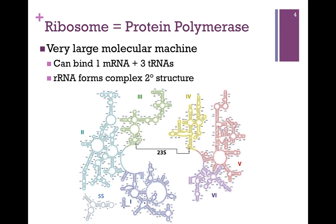One ribosomal unit, which includes both a small and large subunit, combines with one messenger RNA and three tRNA molecules, and we'll see how in just a moment.